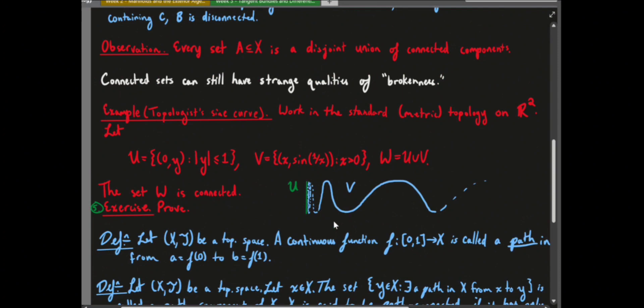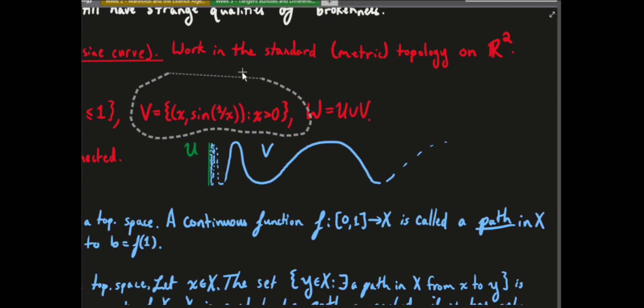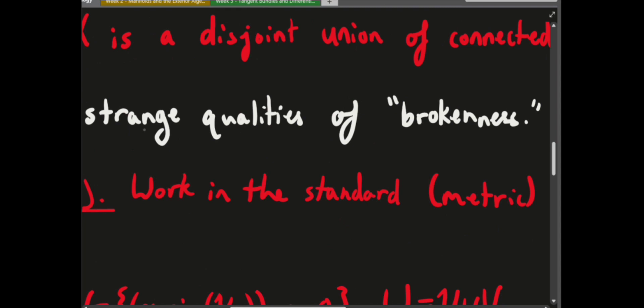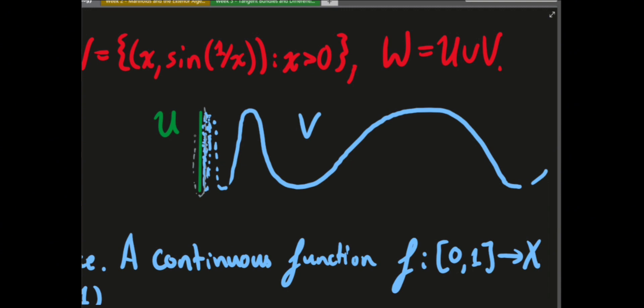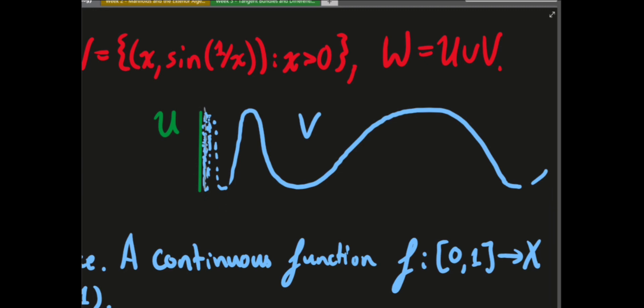An example of a connected set is the topologist's sine curve, given parametrically. The idea is that if you contain one part in any open set, you'll have some non-zero diameter in the x-direction for your open patch, and that's going to intersect the oscillating part at infinitely many places. Because any open set containing the left part must extend right and intersect the curve, you can't wrap two disjoint open sets around the two parts separately.